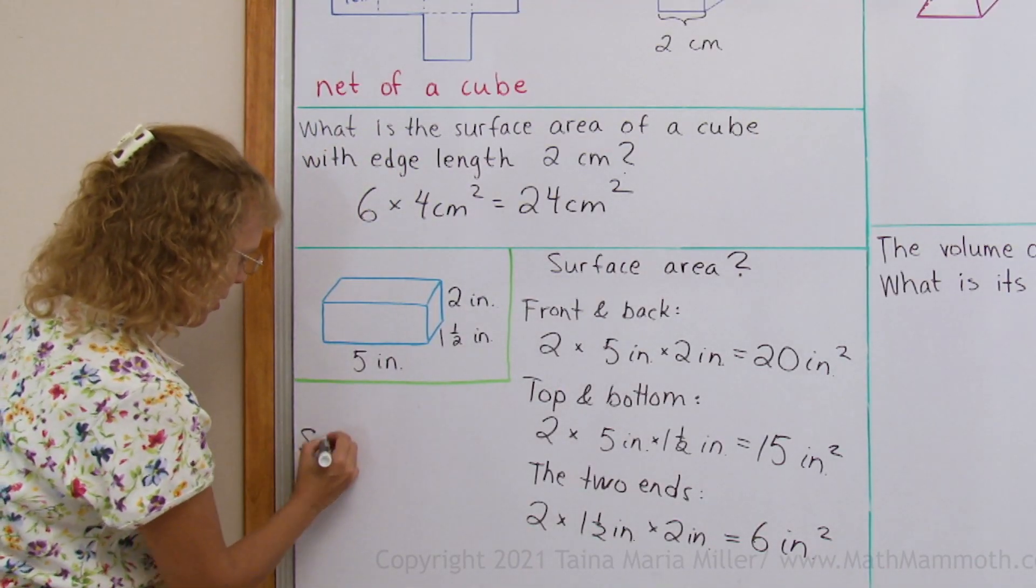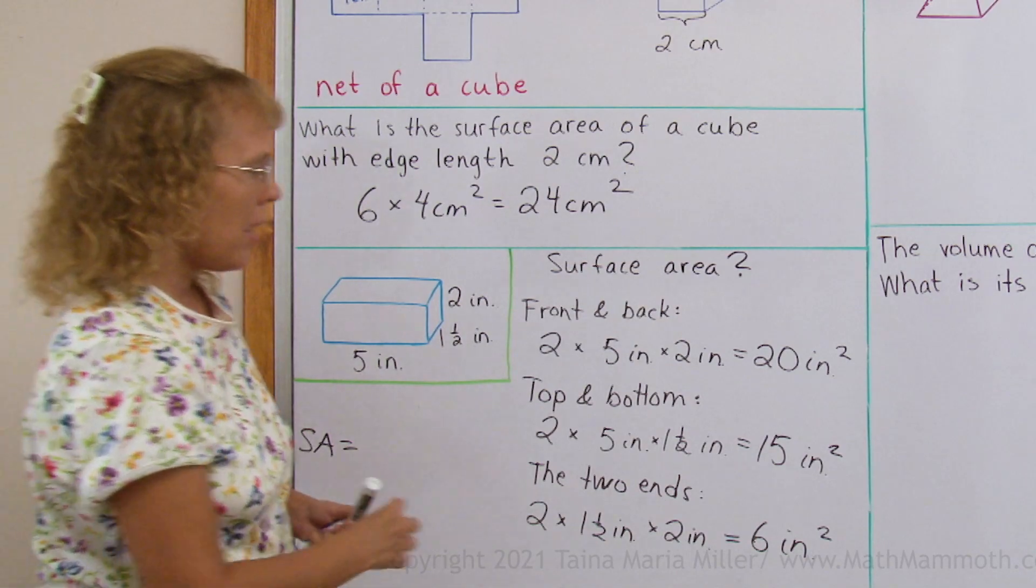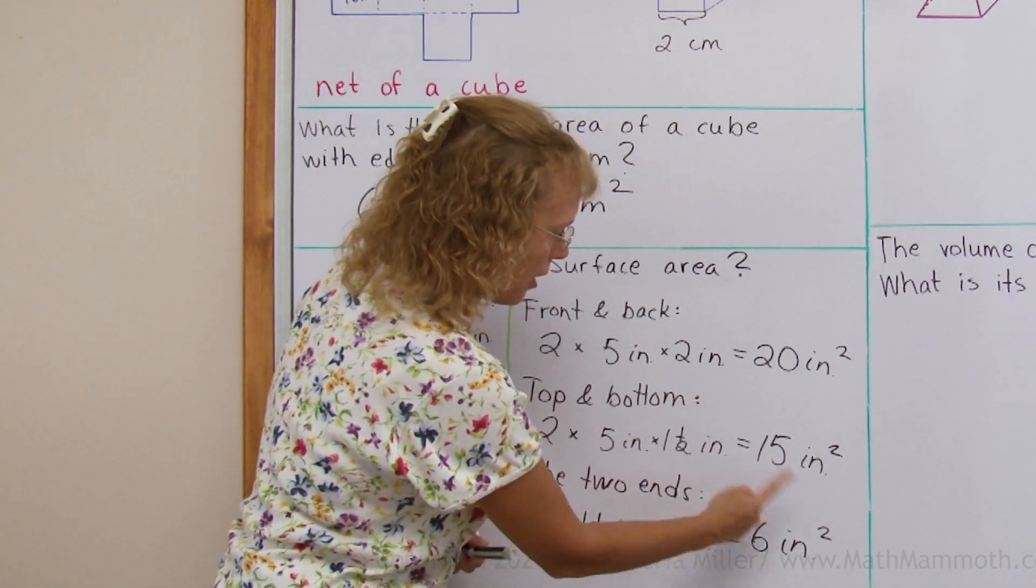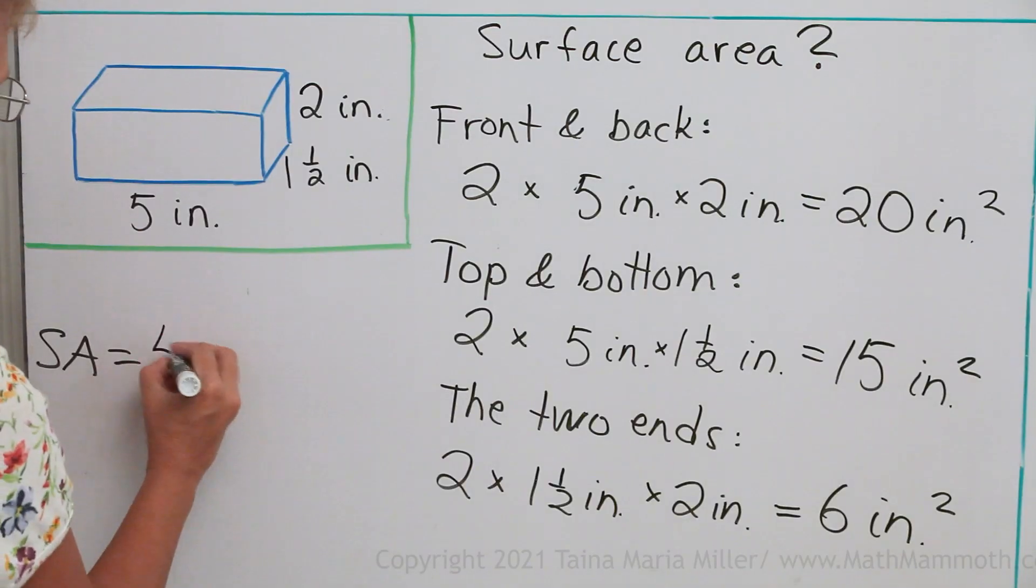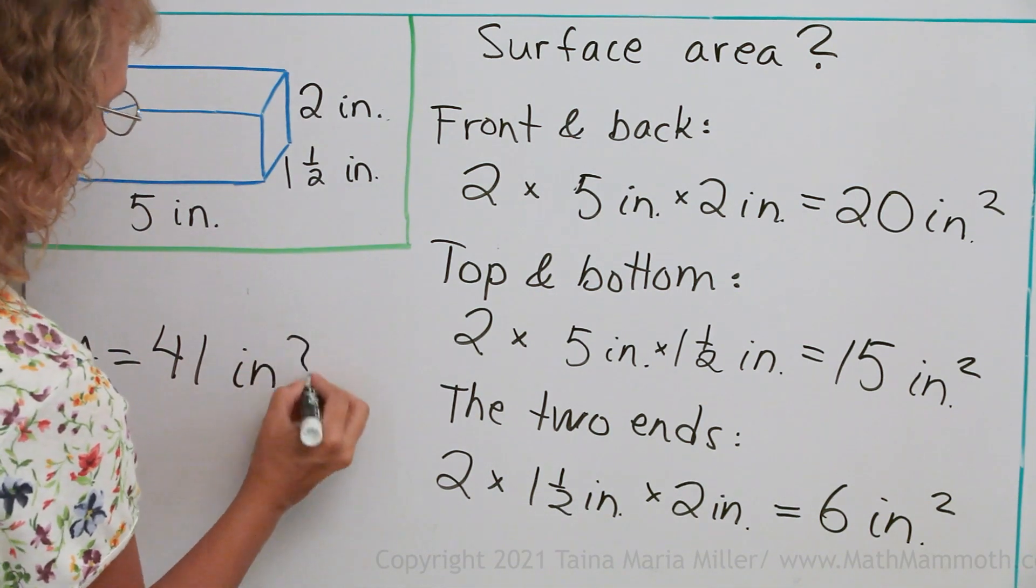And now in total, the surface area. We add this, we add this, so we get 35, 41 square inches.